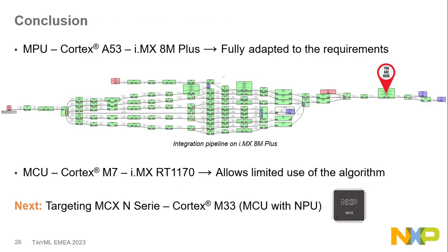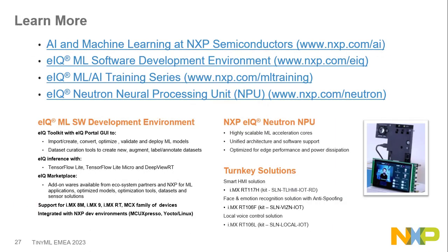As a conclusion, the MPU is well-adapted to requirements. However, the full integration pipeline is more complex — handling buffers, face cropping, and computing input features. For the MCU, the algorithm works for very few faces and may suit some specific use cases, but it remains challenging. We look forward to the upcoming MCXN series — MCU with NPU — since running on NPU was very helpful. For more information, NXP offers machine learning resources and the eIQ toolkit to enable machine learning on NXP hardware.